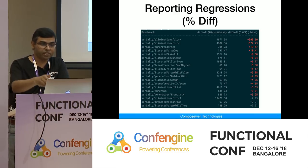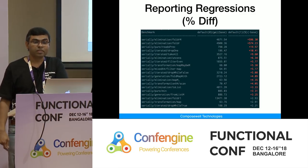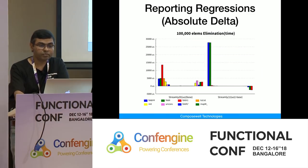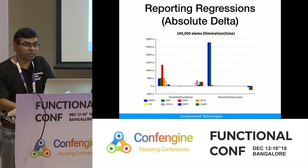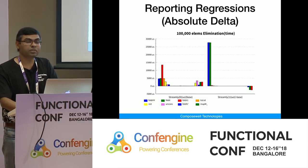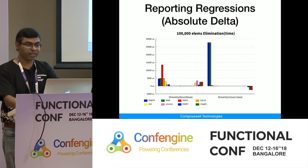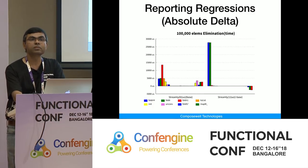This is one of the outputs — sorted by percentage difference. The first one regressed by 596% and it keeps going down. You can also visually see the graphs: the first shows absolute values, the second shows the delta from the first — how much it regressed. Some benchmarks show negative delta, which is improvement.